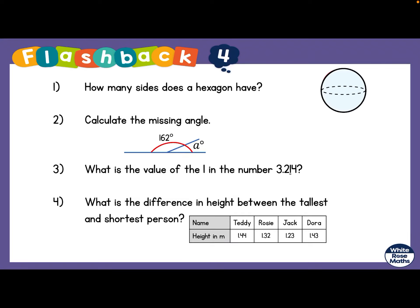Hi everybody, we're going to do some maths now and we're going to start off with our Flashback 4 for our little warm-up. So how many sides does a hexagon have? Calculate the missing angle. Remember it's 180 degrees.